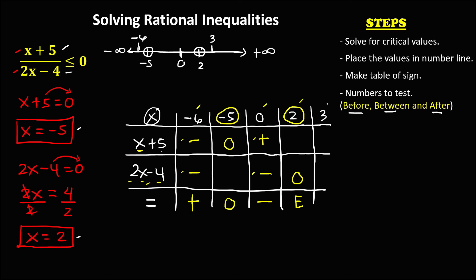For x equals positive 3: in the numerator, 3 plus 5 is positive 8, so the sign is positive. In the denominator, 2 times 3 is 6, and 6 minus 4 is positive 2, so the sign is positive. Positive divided by positive is positive.